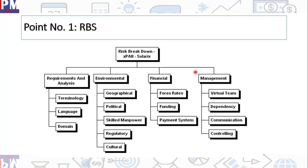So for example, this is taken from my project, a very old historic project called expand solar X. In this project, the categories which are applicable to my project were requirements and analysis, environmental, financial management, and there were quite a few more. Within requirements and analysis, some of them would be connected to terminology, the language, domain, stuff like that. All of these have been broken down.